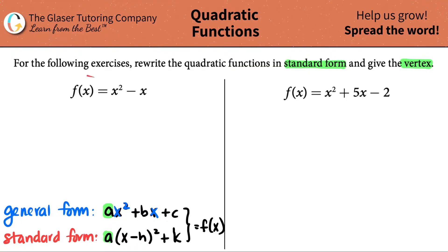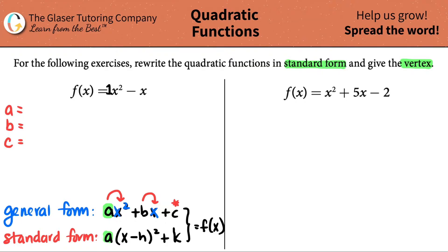The first thing we have to do — let's look at the first function, f(x) = x² - x — we have to find out what the a, b, and c values are. The a value is always the one next to the x squared, the b value is always the one next to the x, and the c value is all by its lonesome. So here I have an x squared. The number in front will always tell you the a value, but there is no number here, so it would technically be a 1. So my a value is 1.